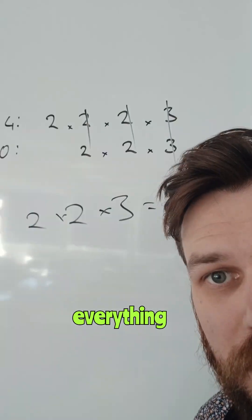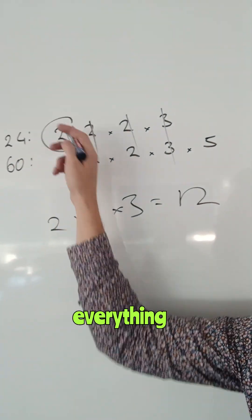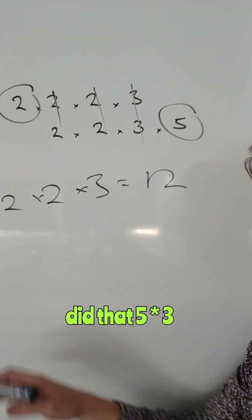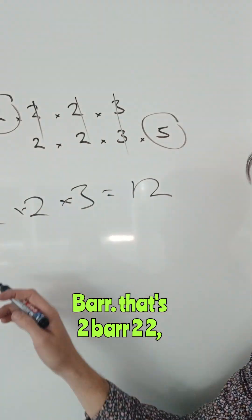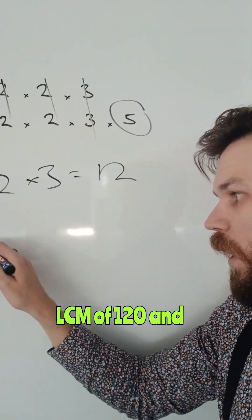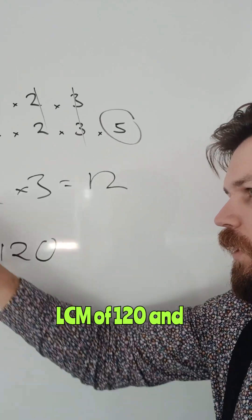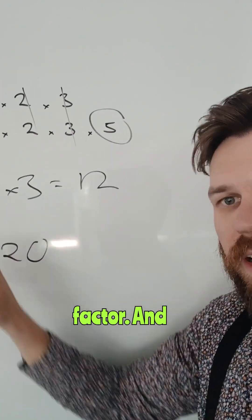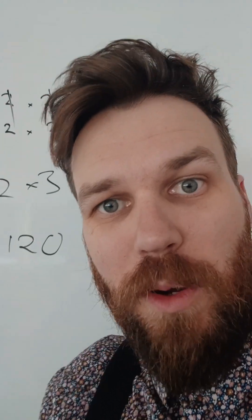The lowest common multiple is everything they share multiplied by everything that they don't. So: 5 times 3 times 2 times 2 times 2 times 2, that's going to give me a lowest common multiple, or LCM, of 120. And this is the highest common factor. And there we go — that's how you do it, folks.